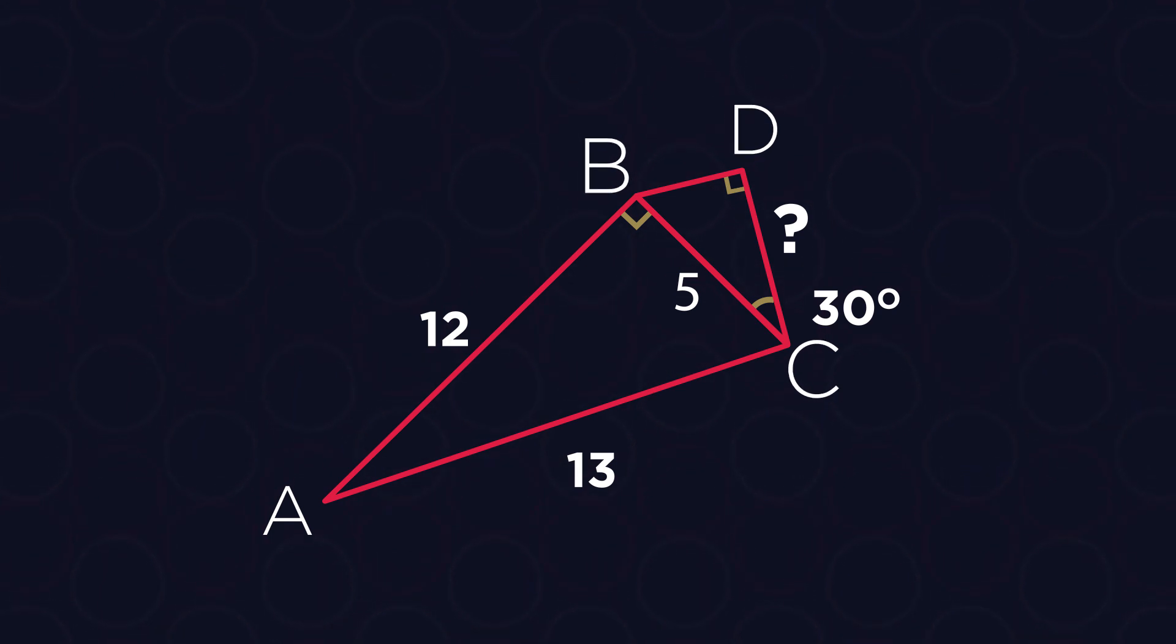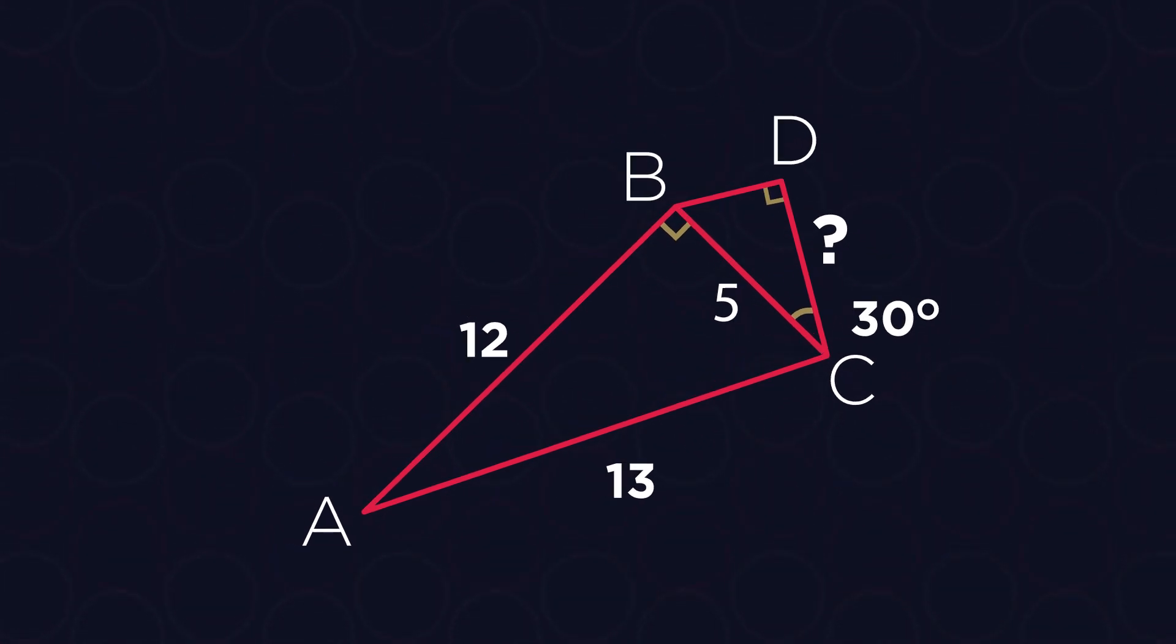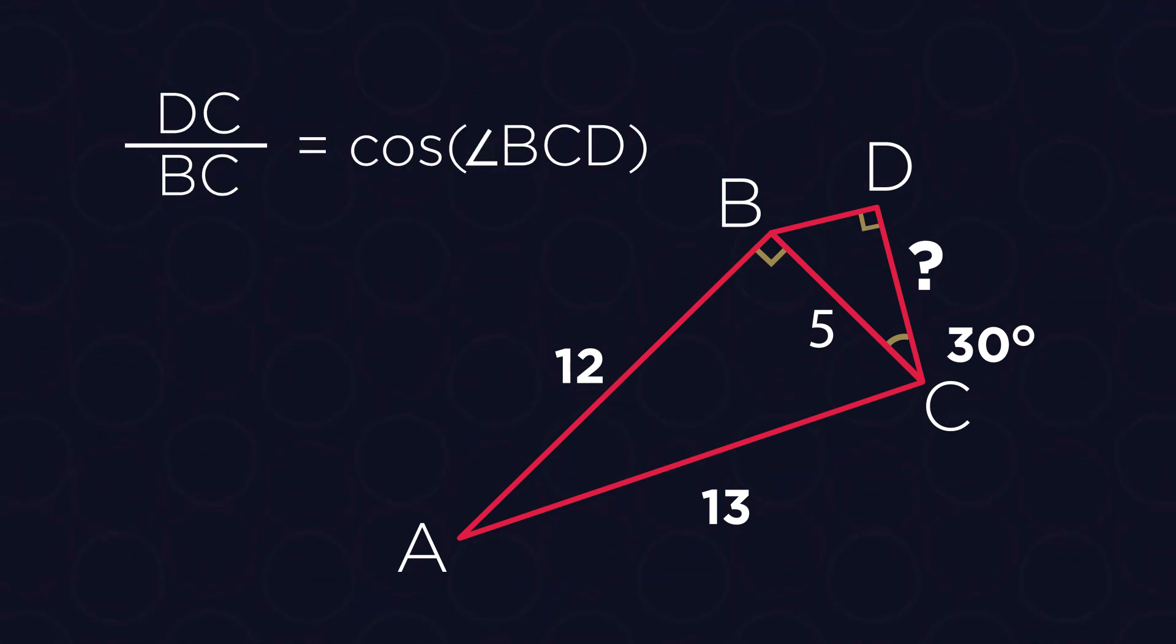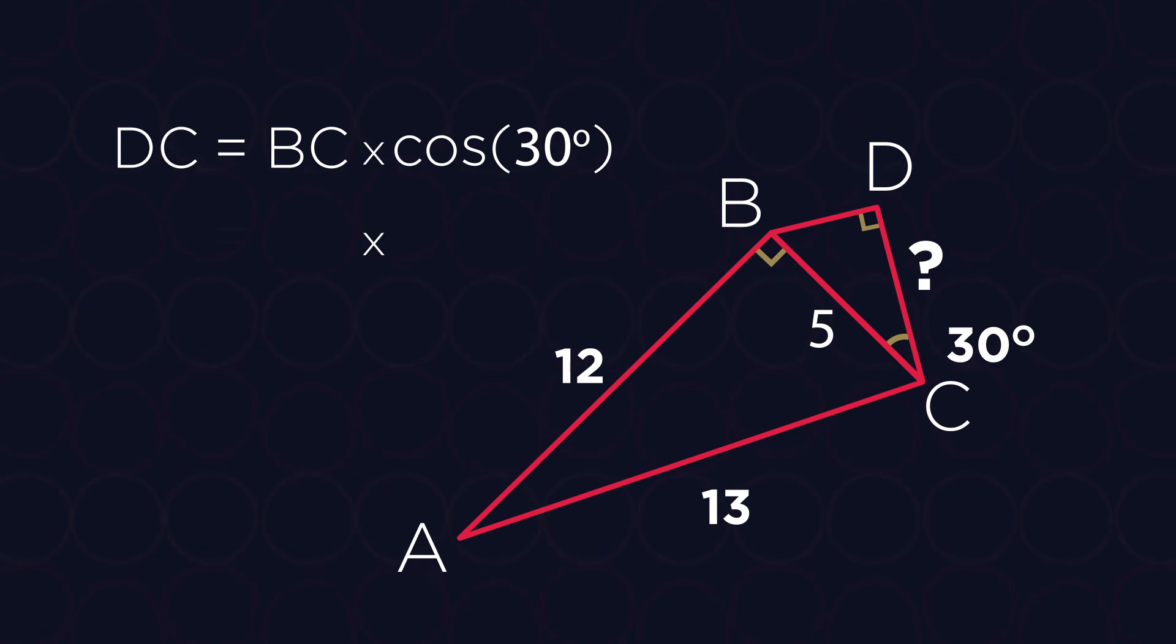We know angle BCD is 30 degrees. BC is the hypotenuse and DC is adjacent to angle BCD. So the ratio between DC and BC is simply the cosine of angle BCD, which we know from the CAH part of SOHCAHTOA. As a result, DC equals the product of BC and cosine 30 degrees.